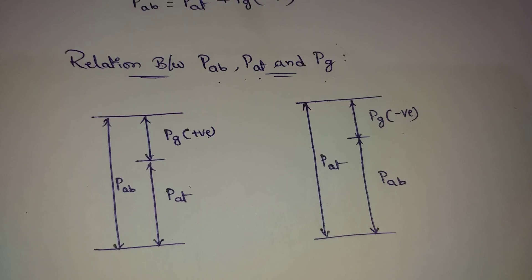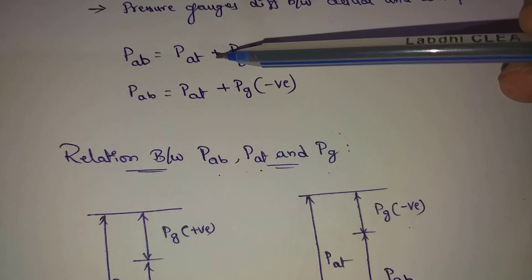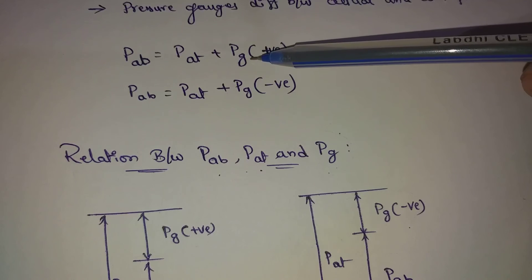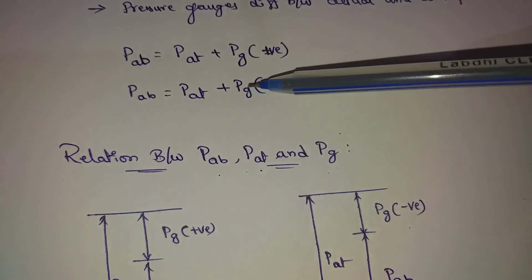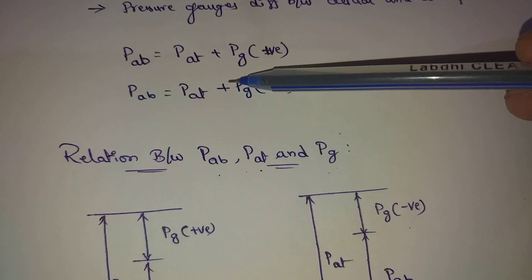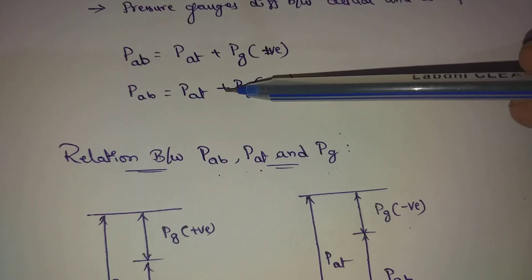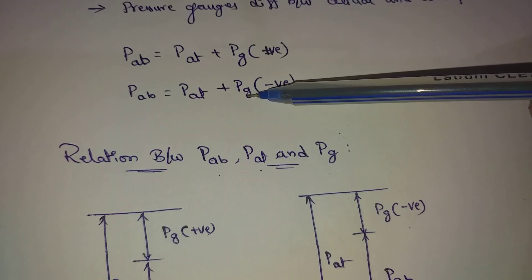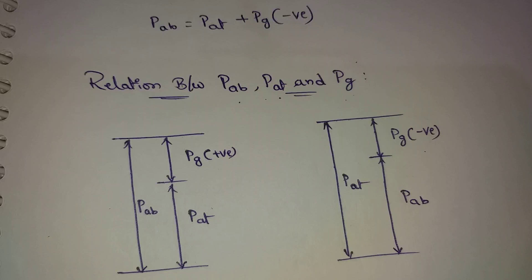So this is the relationship: P absolute equals P atmospheric plus gauge pressure — this is for positive gauge. For negative gauge, P absolute equals atmospheric pressure minus gauge pressure, where minus P_gauge is the gauge pressure. So the relationship covers absolute pressure, atmospheric pressure, and gauge pressure. If you like this video, please like and subscribe to my channel. Thanks for watching, see you next time.